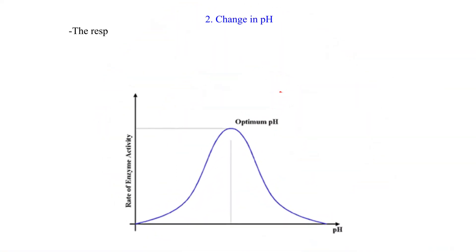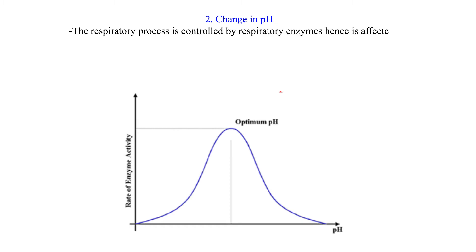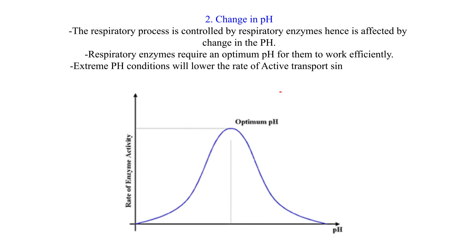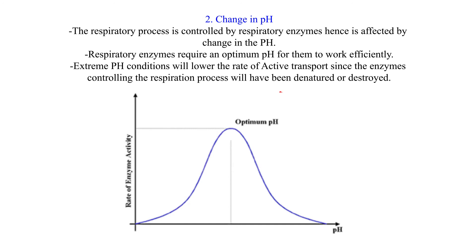2. Change in pH. The respiratory process is controlled by respiratory enzymes, hence it is affected by changes in pH. Respiratory enzymes require an optimum pH for them to work efficiently. Extreme pH conditions will lower the rate of active transport since the enzymes controlling the respiration process will have been denatured or destroyed.